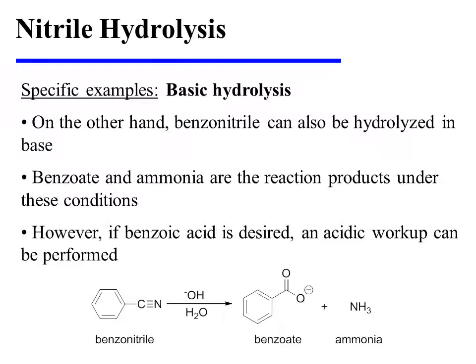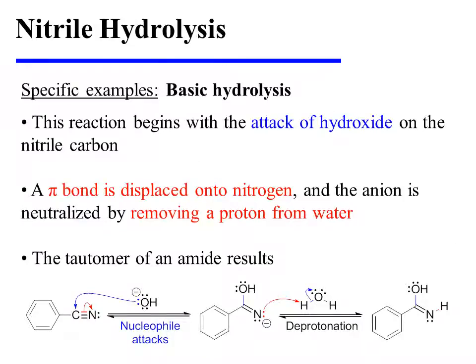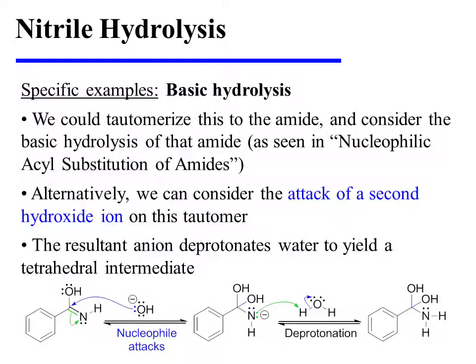Benzonitrile can also be hydrolyzed in base. Benzoate and ammonia are the reaction products under these conditions. However, if benzoic acid is desired, an acidic workup can be performed. This reaction begins with the attack of hydroxide on the nitrile carbon; a pi-bond is displaced onto nitrogen. The anion thus formed is neutralized by removing a proton from water, and the tautomer of an amide also results from this process. We could tautomerize this to an amide and consider the basic hydrolysis of that amide, as seen in the video on the nucleophilic acyl substitution of amides.